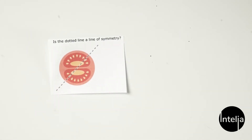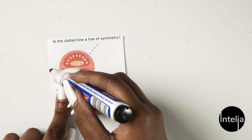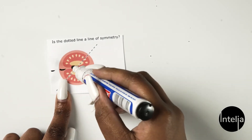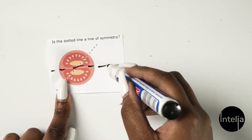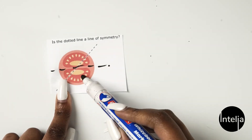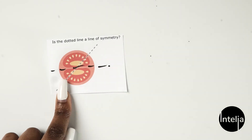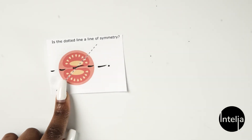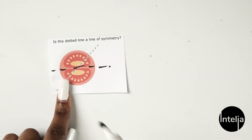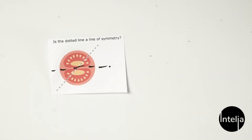If we had to draw a line of symmetry, it would be here — this half would be exactly the same as that side. That would be your line of symmetry.